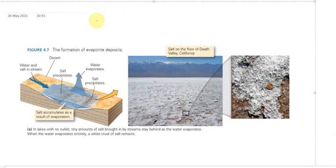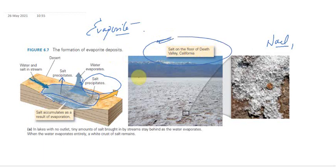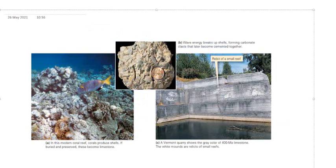Evaporite is formed when there is a salt lake or salt sea that gets evaporated and the salt precipitates or is left behind. The salt can be NaCl (halite) or gypsum (CaSO4). An example is Death Valley in California, which has this salt bed where evaporite deposits are present.